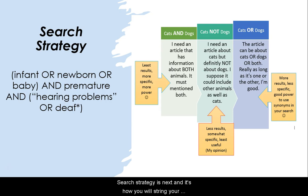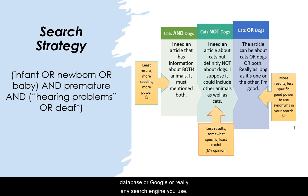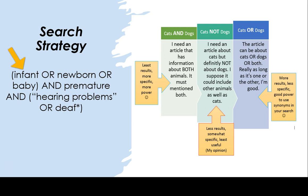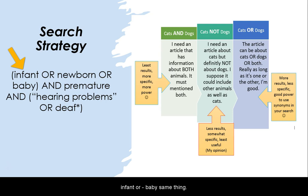Search strategy is next, and is how you will string your main concepts, subject headings, and synonyms together to search a library research database, Google, or really any search engine you use. Here you'll see an example of a search strategy based on my sample topic. In parentheses, I have 'infant OR newborn OR baby.' This tells the database that any of these terms will do — infant or baby, same thing.